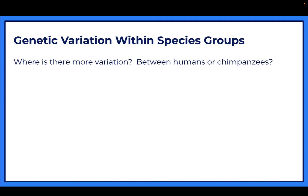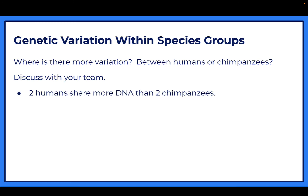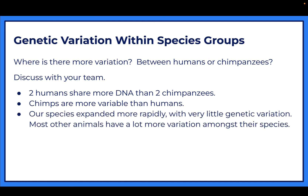So where is there more variation - between humans or chimpanzees? Write down what you think on your paper. Two humans share more DNA with each other than two chimpanzees share with each other. Chimps are therefore more variable than humans - in a population of chimpanzees, there's more variety in the DNA.